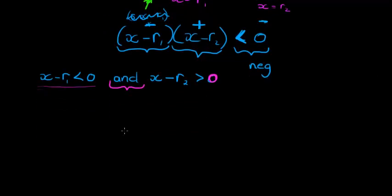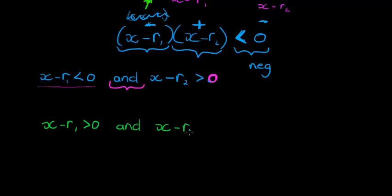That's not the only solution — it's one half of the solution. The other option is that (x − r1) is greater than zero, which means (x − r2) must be negative. So if this one is positive that one has to be negative. These are my two cases.